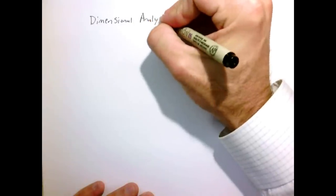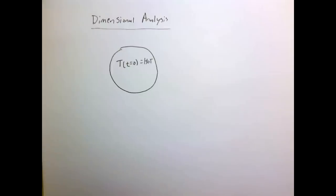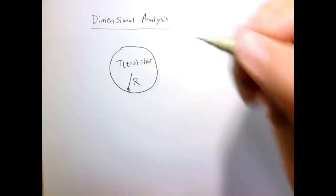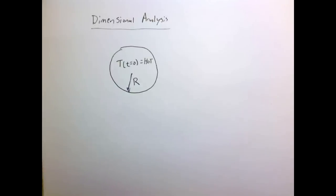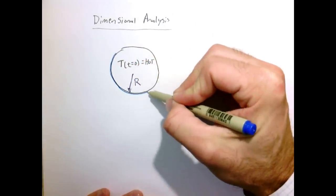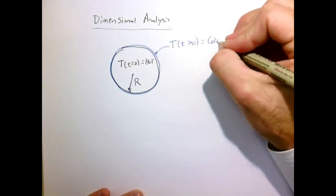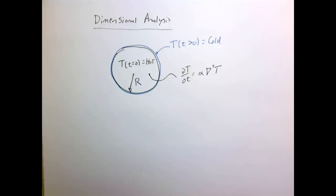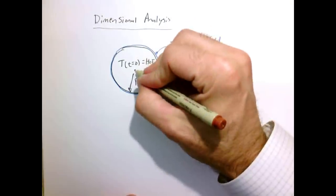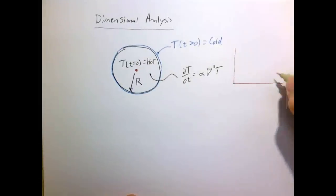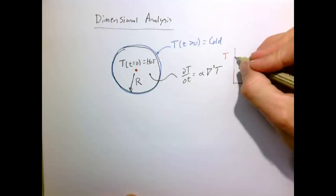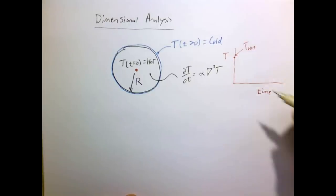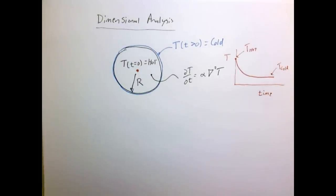Now let's use dimensional analysis to see what we can learn about the character of the solution without actually solving a problem. Let's take a situation where at time equals zero the temperature is a constant hot value. Our object will be a ball with radius R, and at time equals zero I'm going to plunge this hot object into something cold, which will hold the outer surface at some temperature T cold. Inside our domain the heat equation must hold, and we suspect that if we put a temperature probe at the center and measured the temperature as a function of time, it would start at T hot, decay, and at equilibrium become T cold.